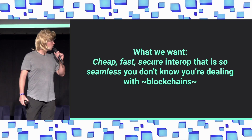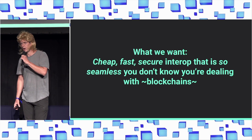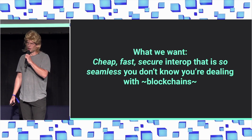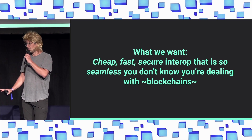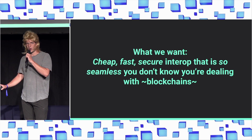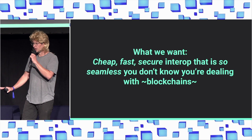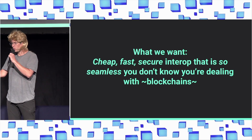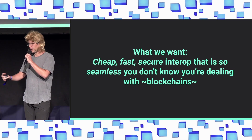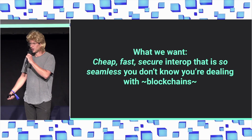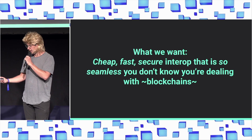What we want — and I think everyone generally agrees — is cheap, fast, and secure interop that is so seamless you don't know you're dealing with blockchains. The 'you don't know you're dealing with blockchains' part is called chain abstraction. People like talking about chain abstraction right now, and I think that's great. The general point is we want to connect this modular ecosystem — we're here at Modular Summit — so that it feels like one unified platform where users just click buttons and do things.